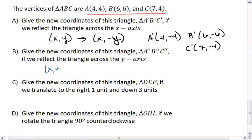Meaning that the ordered pairs (x, y) are transformed into (-x, y). Okay, A double prime is negative 4, 4. B double prime is negative 6, 6. And C double prime is negative 7, 4.